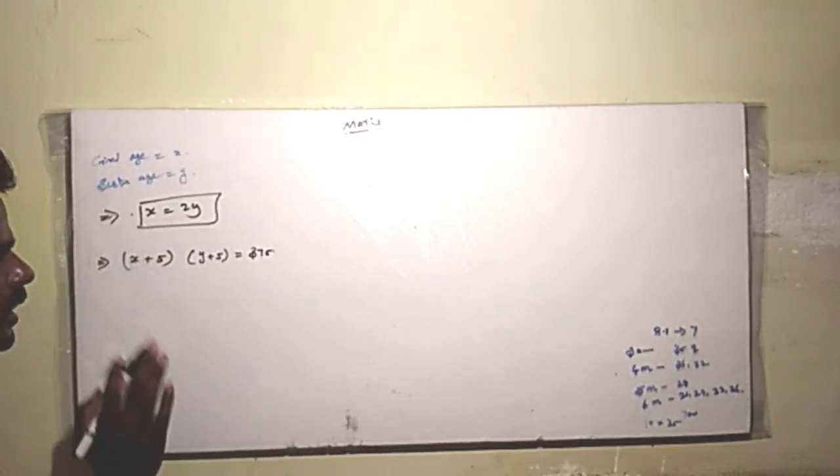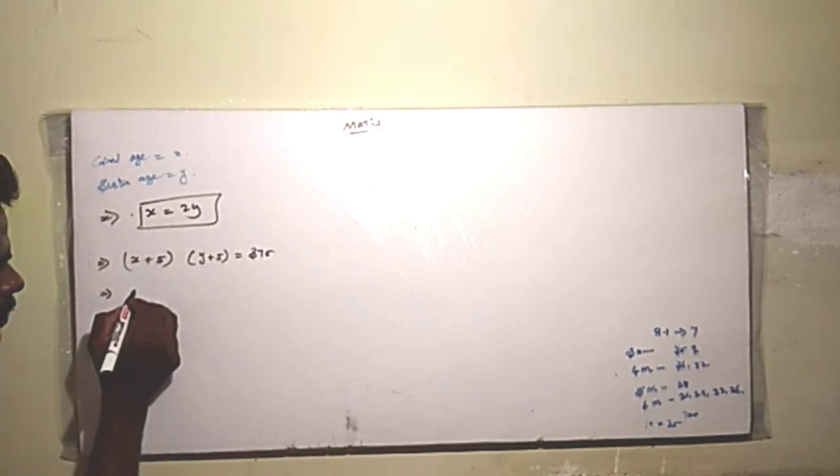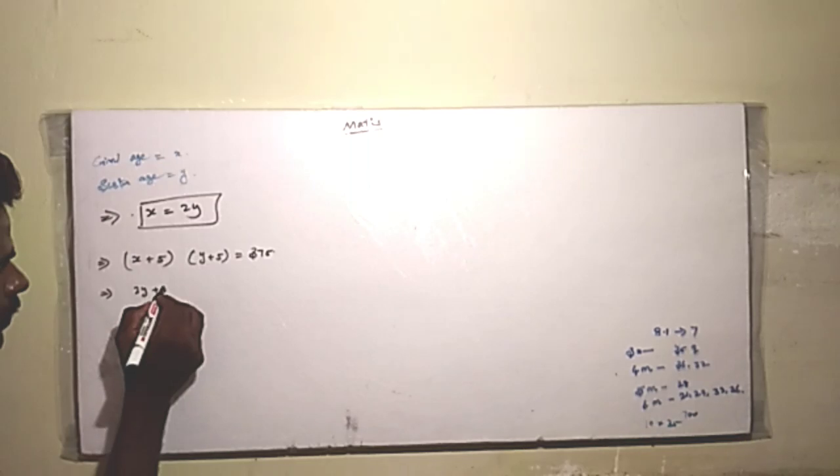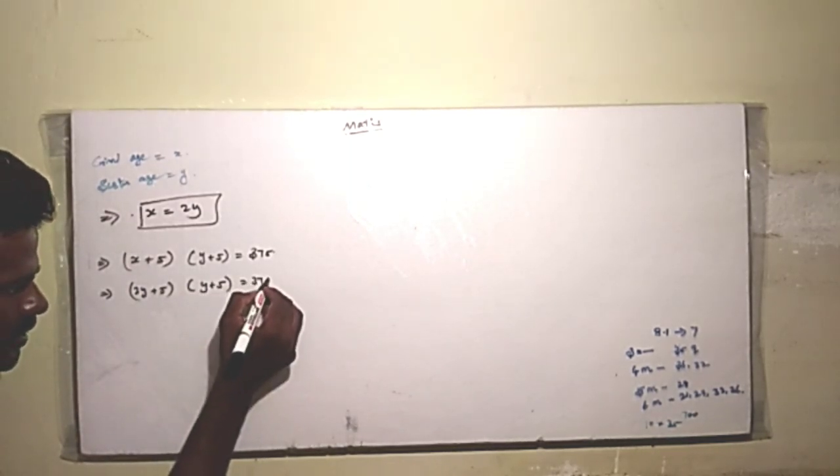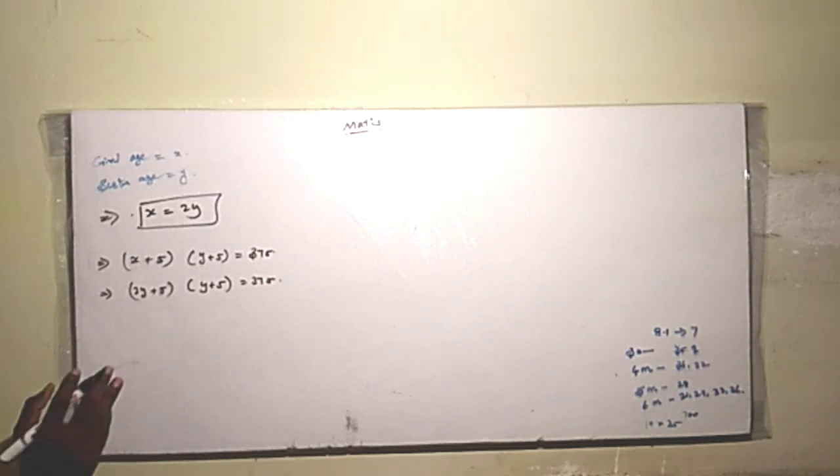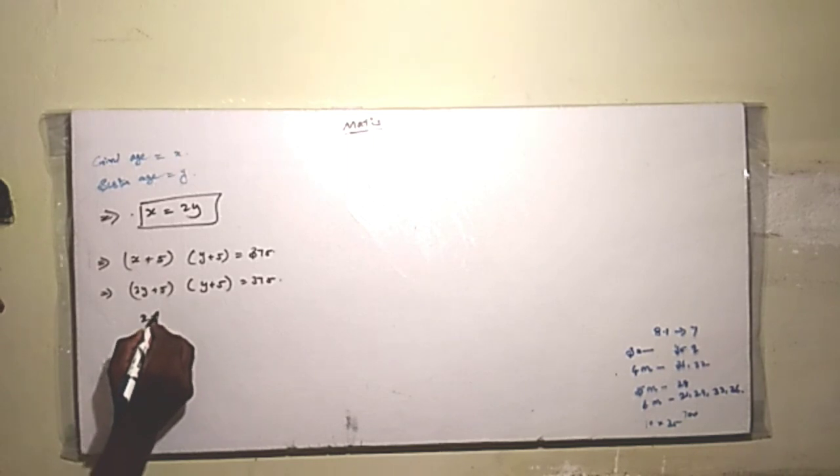So we have x equals 2y. Substitute this into the equation: x plus 5 times y plus 5 equals 375. So 2y plus 5 times y plus 5 equals 375.